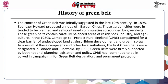The concept of greenbelt was initially suggested in the late 19th century. In 1898, Ebenezer Howard proposed an idea of garden cities. These garden cities were intended to be planned and self-contained communities surrounded by greenbelts, containing carefully balanced areas of residences, industries and agriculture. In the 1930s, the Campaign to Protect Rural England, that is CPRE, campaigned for a clear barrier of undeveloped land against ribbon development and urban sprawl.